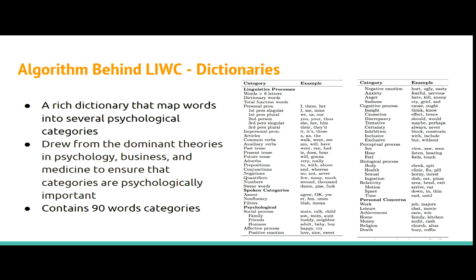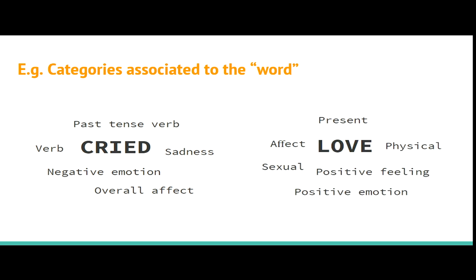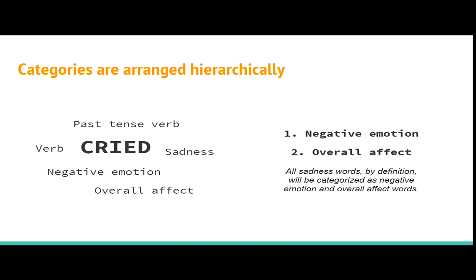Because LIWC processes transcribed verbal text, it includes categories for fillers and swear words, as well as psychological categories such as positive emotion, negative emotion, sadness, and so on. For the word 'cry,' these are some of the categories that would be associated with it, and for the word 'love,' the following categories apply. The dictionary is arranged in a hierarchical order, so for example, 'cry' and similar words by definition would be categorised as negative emotion and overall affect words.